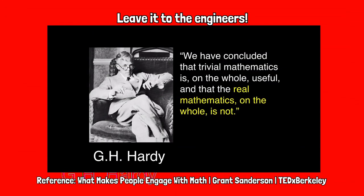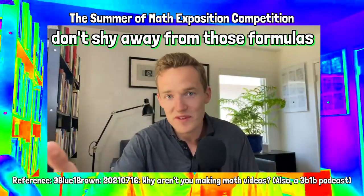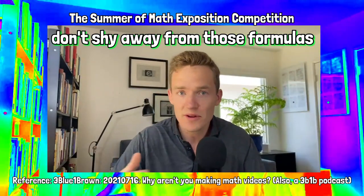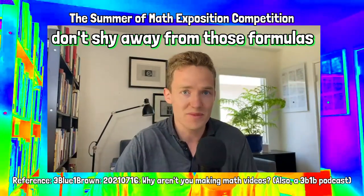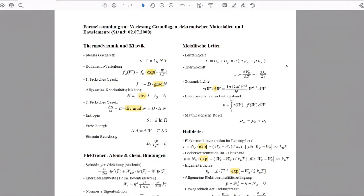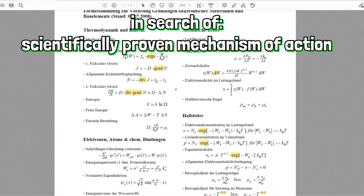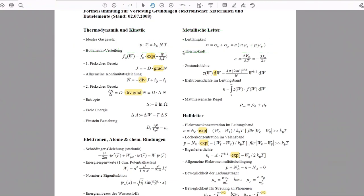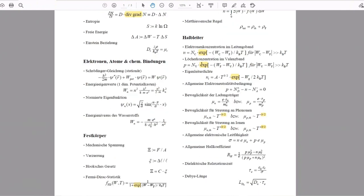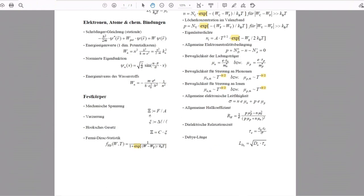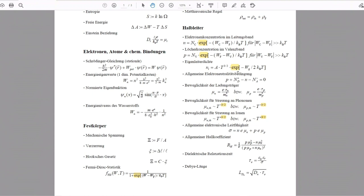Fourier transforms, neural networks — all that trivial stuff might be useful, but leave it to the engineers. If you're doing physics and there are formulas that are relevant, don't shy away from those formulas. In search of causalities, nothing is more important than a scientifically proven mechanism of action. Please don't get excited or confused — we just take a brief look at a semiconductor physics formula sheet. You don't have to understand all of this. We are just looking for nonlinear functional equations.